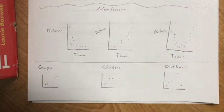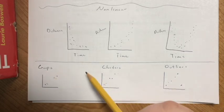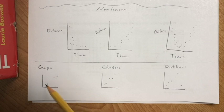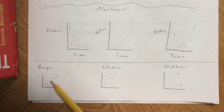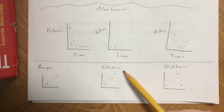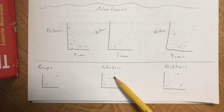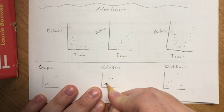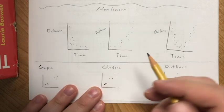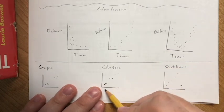The last three terms to know are gaps, clusters, and outliers. A gap is when there's a space between two sets of data points — the overall trend may still be positive, but there's a noticeable gap. Clusters are the opposite: data points that all group together into one spot, making the trend harder to see clearly.